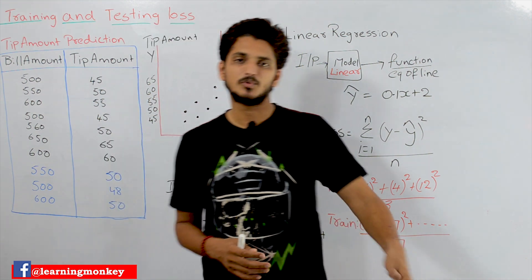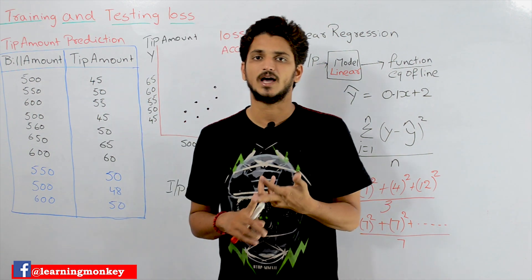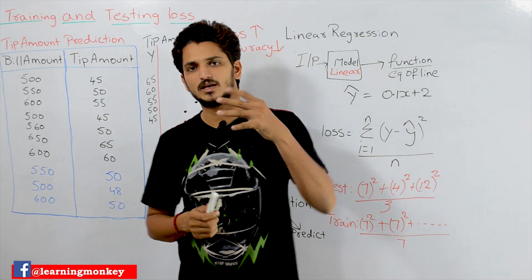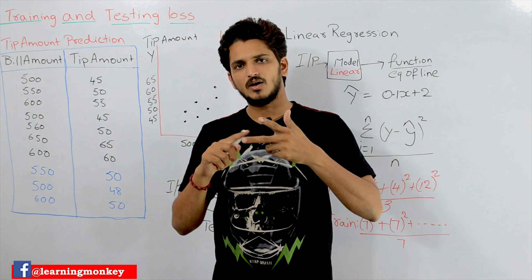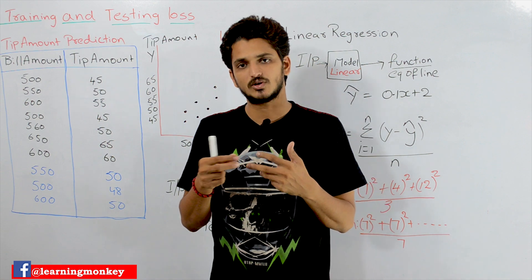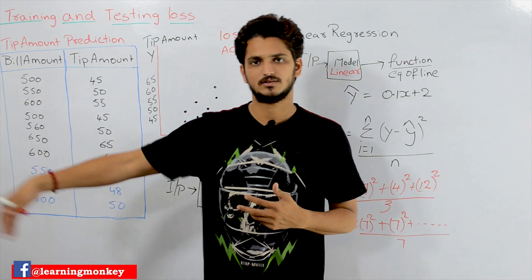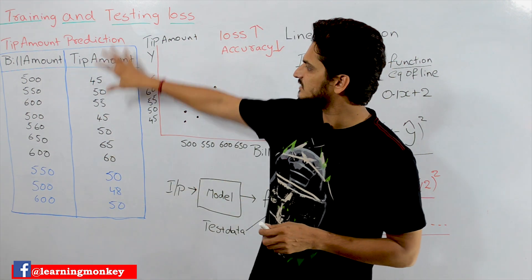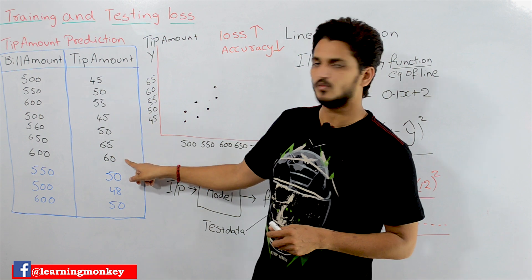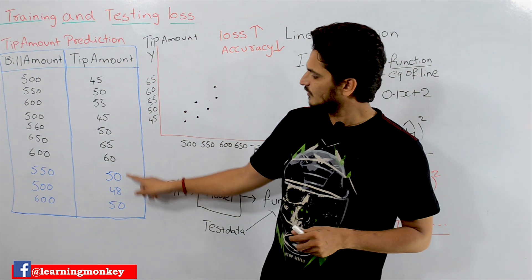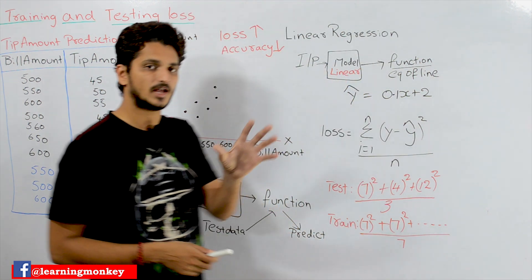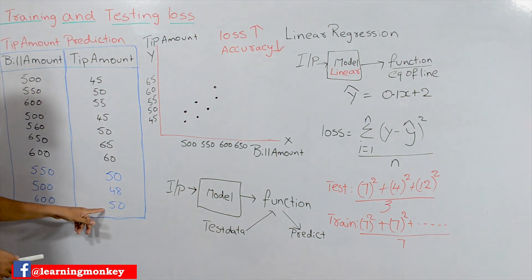In our previous class, when we discussed training data, testing data, and validation data, we said our dataset will be divided into 3 different splits: training data, validation data, and testing data. For now, forget about validation data — we'll cover that later. We are splitting this data into two datasets: training data and testing data. The points in black are taken as training data points, and those in blue as testing data points. Out of 10 total data points, 7 are taken for training and 3 for testing.